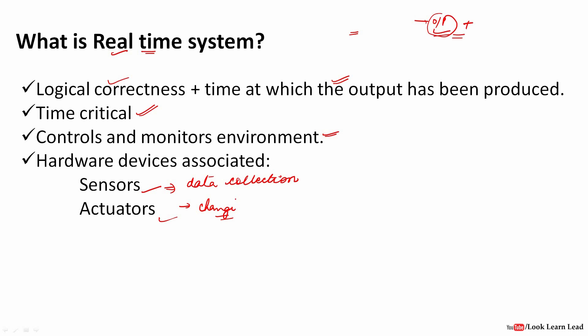In a real-time system, there must be a deadline, and within that deadline a logically correct output must be produced. A simple real-world example is a clock — a clock must always show the correct time. If it shows delayed time, there is no use for it. So a clock can be compared to a real-time system.